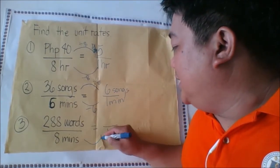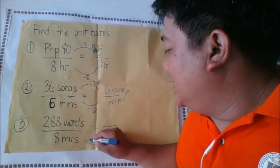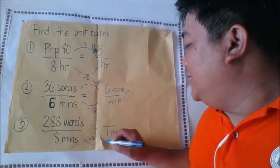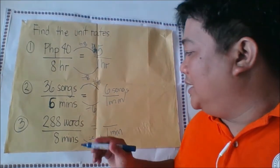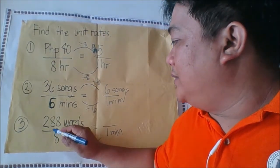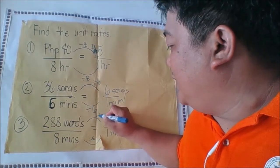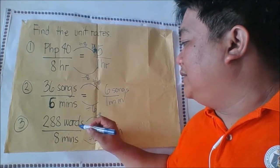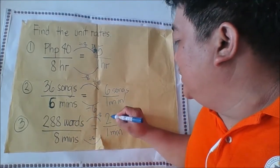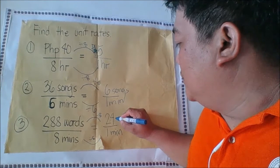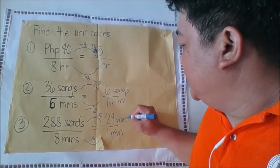8 minutes divided by 8 is 1 minute. Again, divide the first term with 8. So 288 words divided by 8 is equal to 24 words.